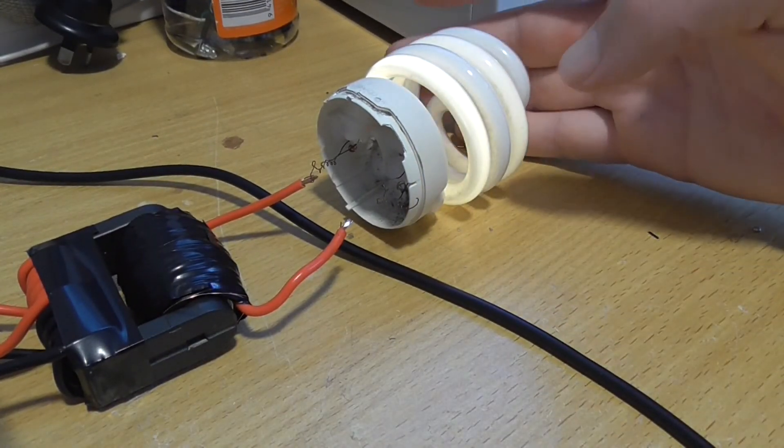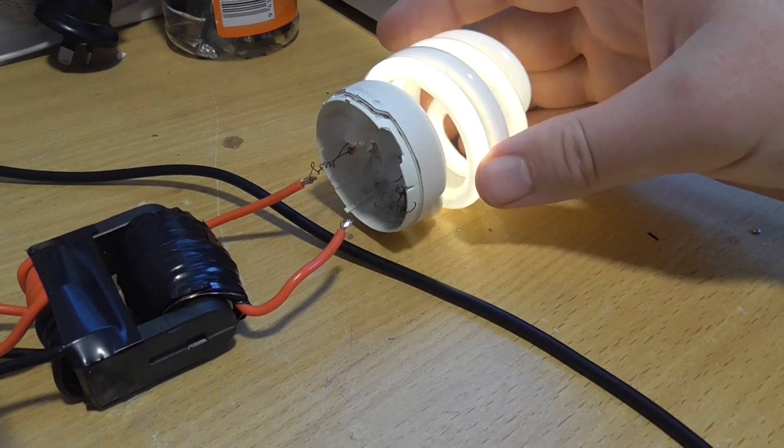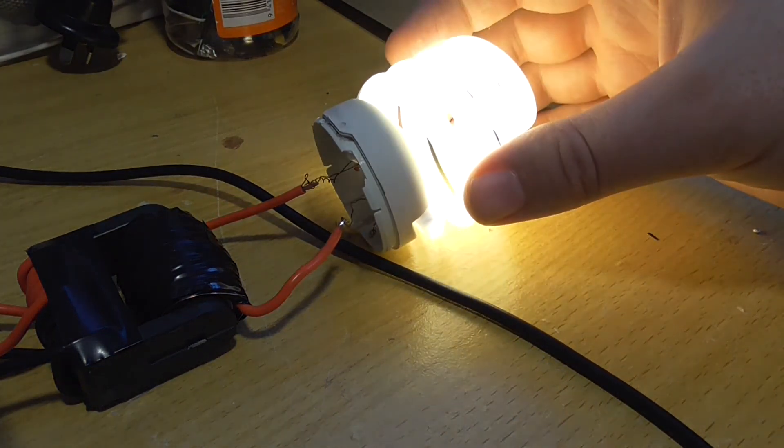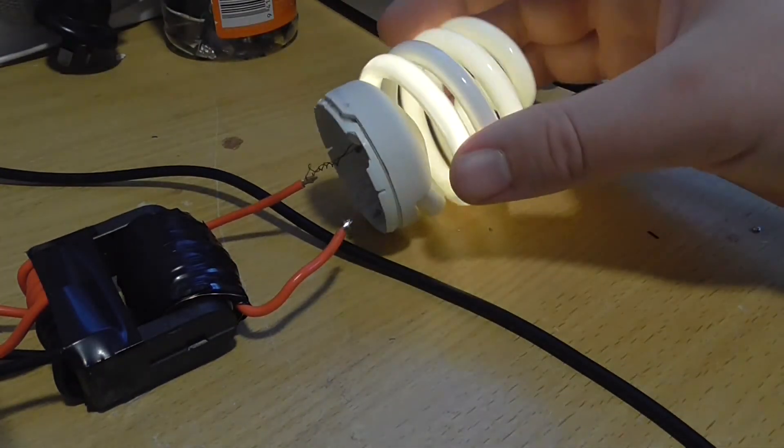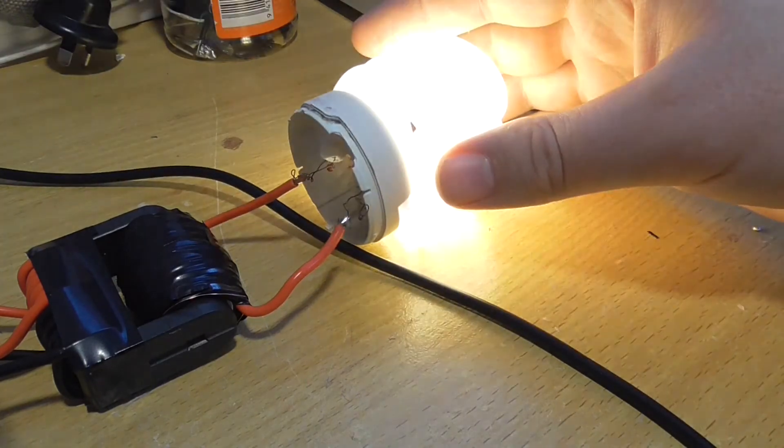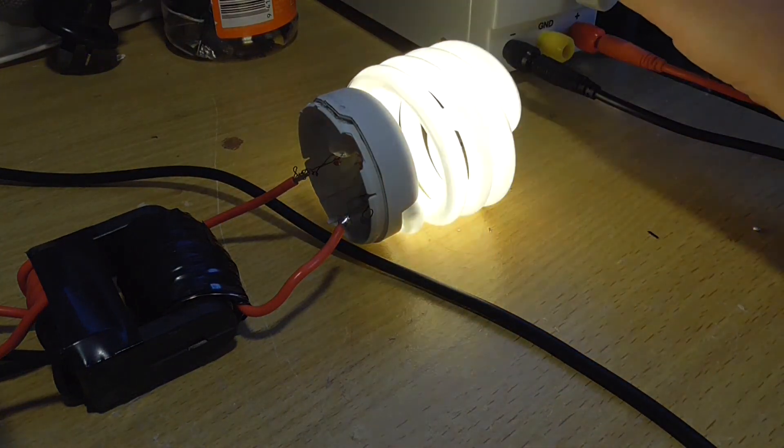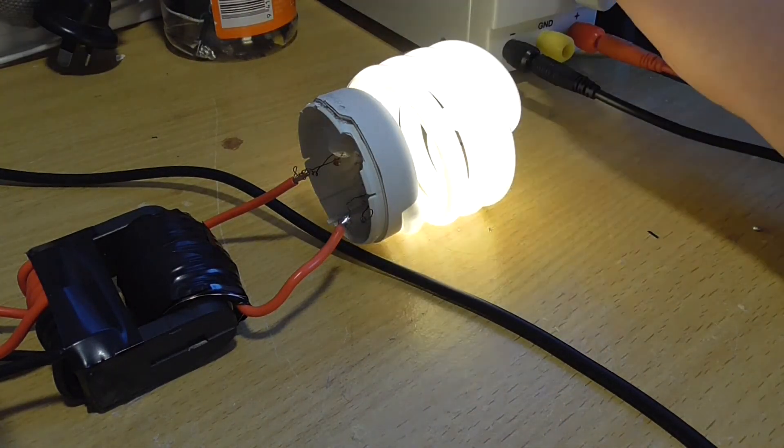So if we connect the one we get partial glow, and connect both and you get quite a bright light as it's supposed to work. And dims with the voltage.